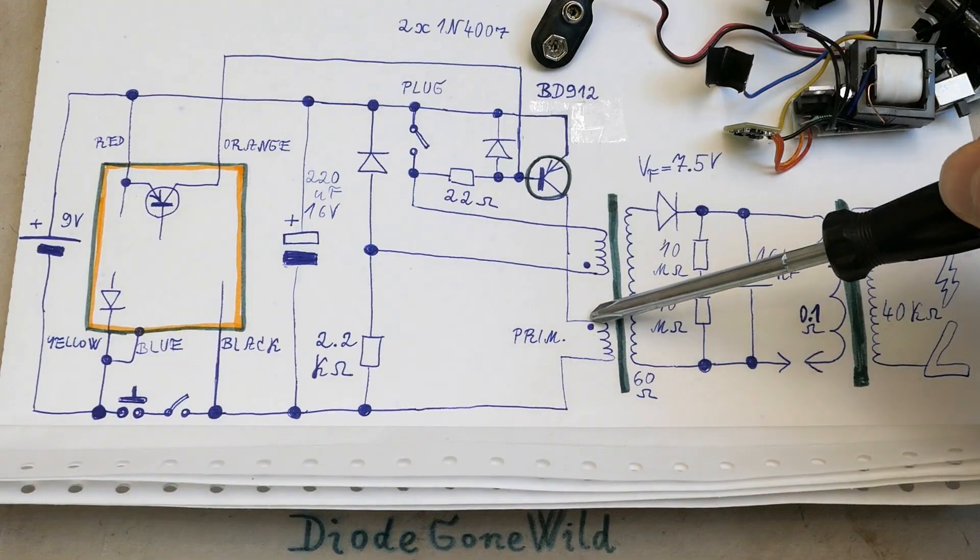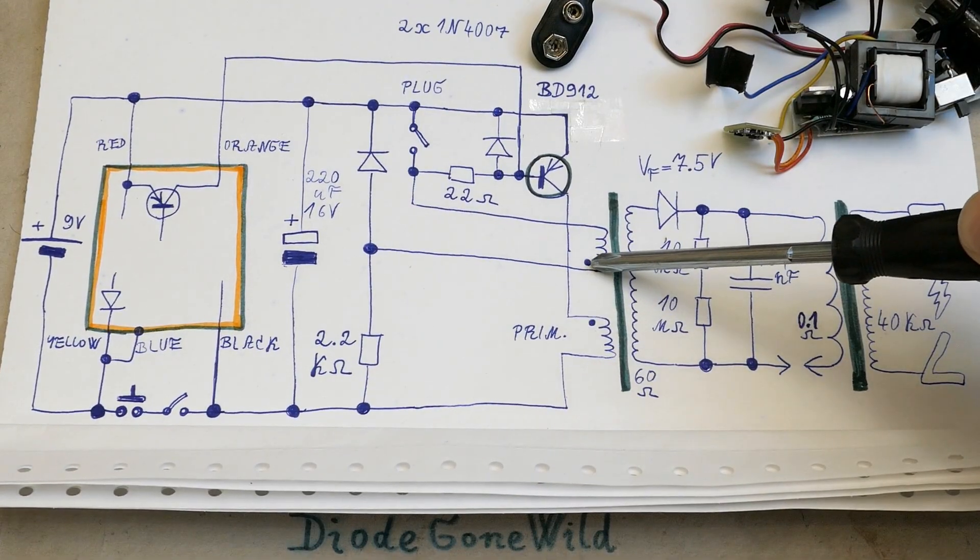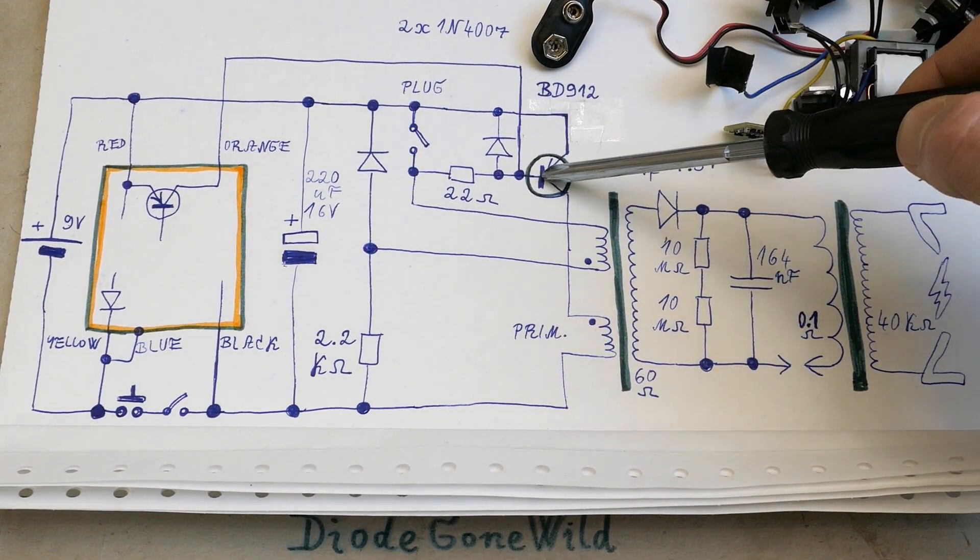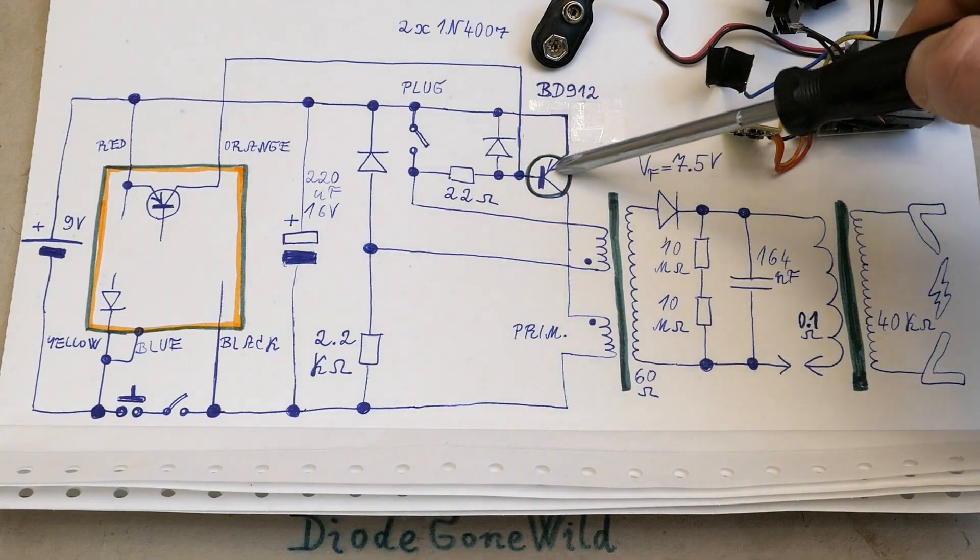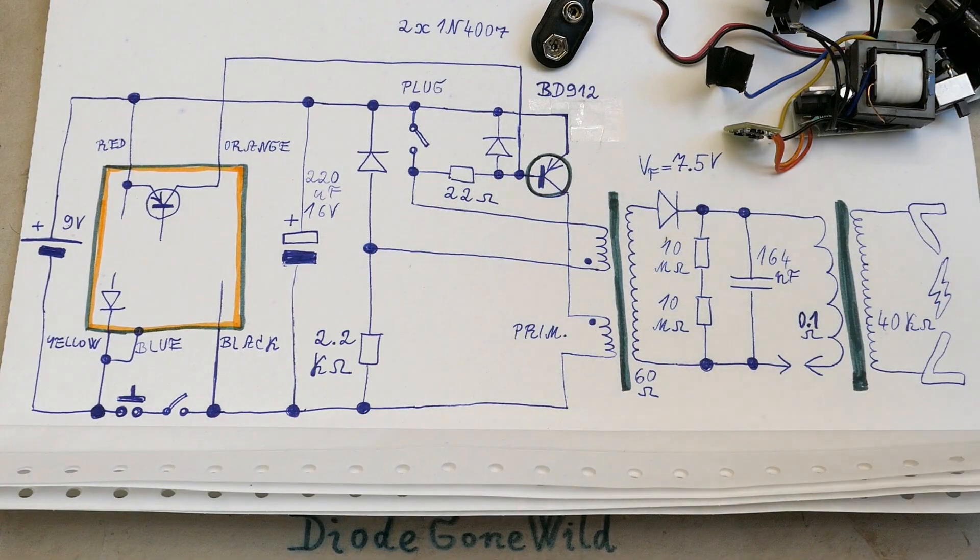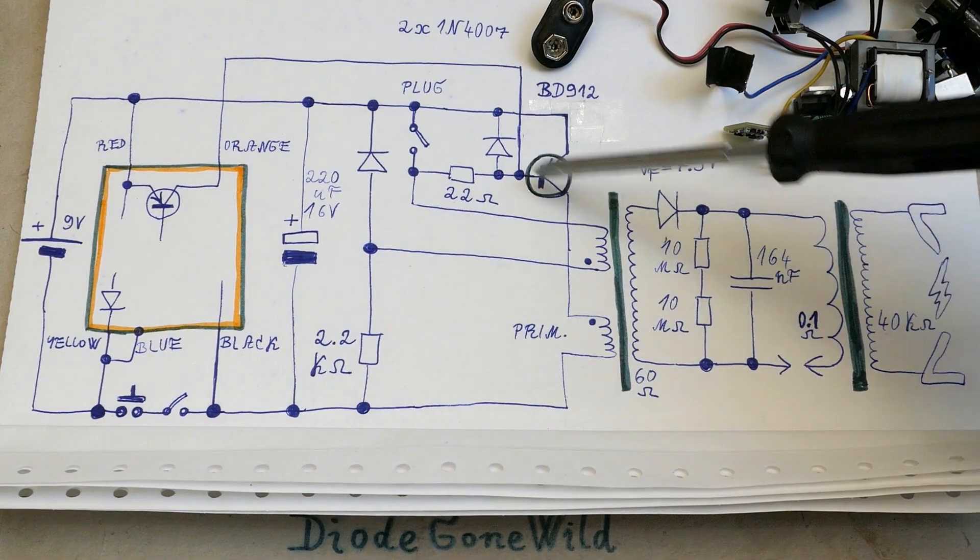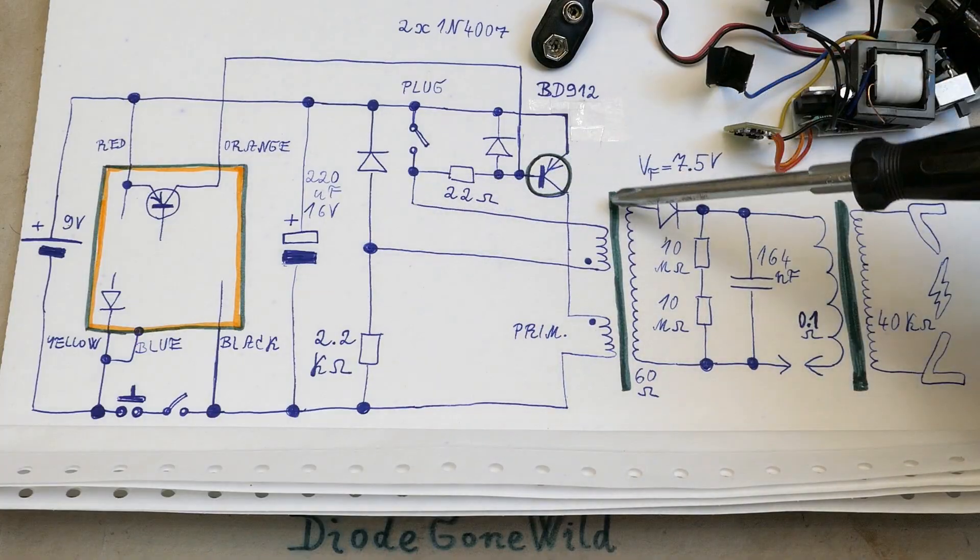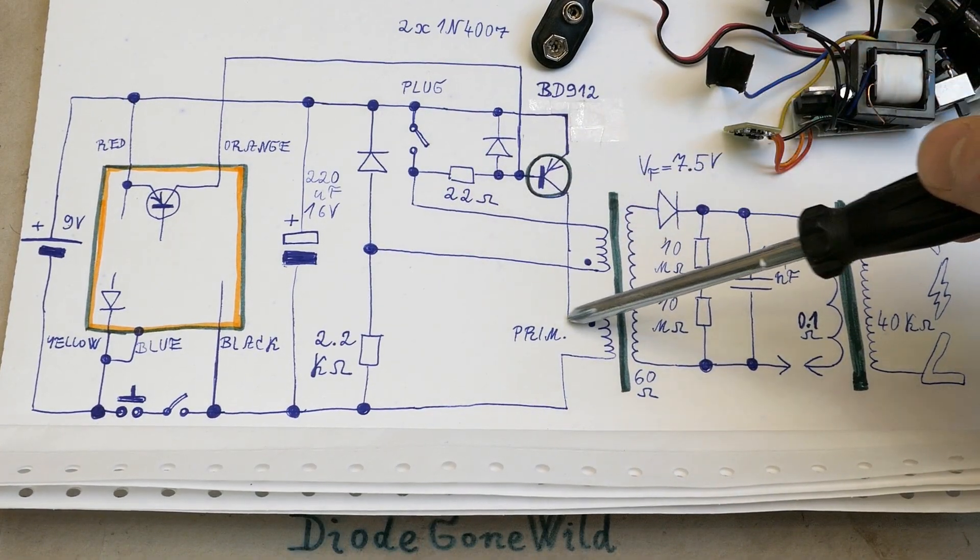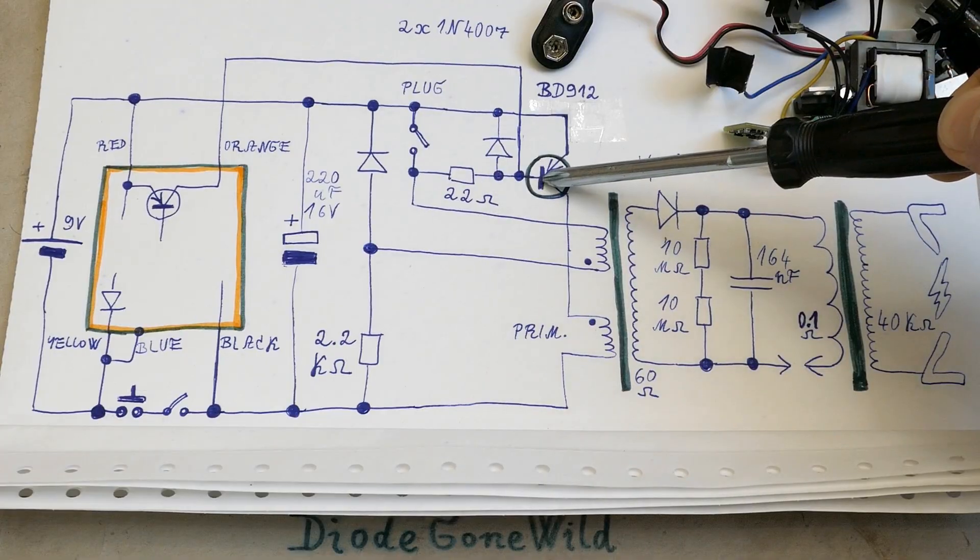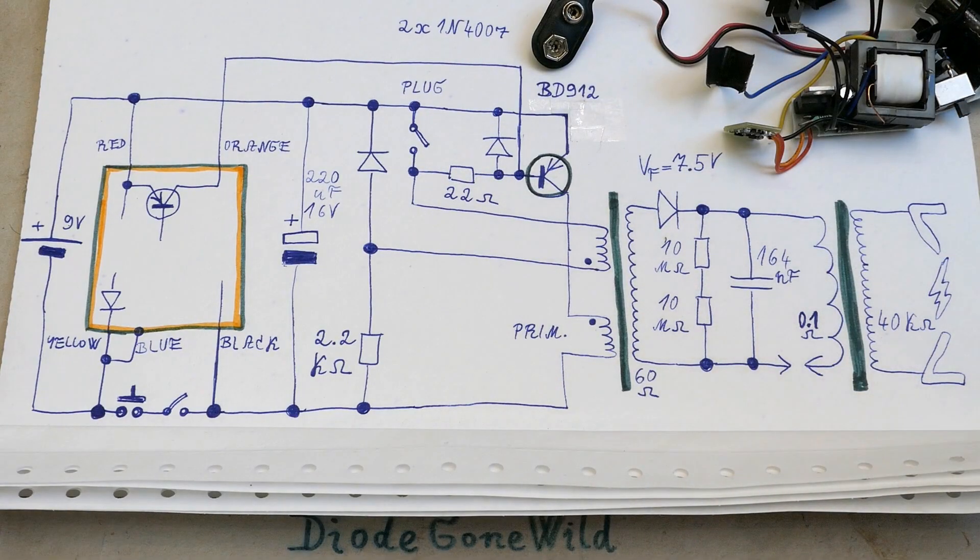For startup there's this startup resistor. Initially when connected, a small current goes through the base of the transistor, this resistor, this winding and this resistor. The transistor turns partially on and then there's positive feedback from the feedback winding, making it oscillate. When the transistor is on, this side of the winding is positive, this negative. It's a PNP transistor, so it's on when current goes from the base out.